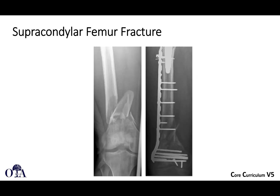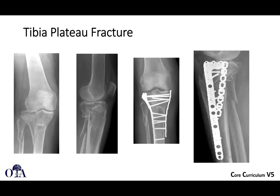Here's a supracondylar femur fracture, and you can see some kind of total hip arthroplasty stem in the femur above. There are some independent, possibly lag screws here, a plate and screws, maybe some locking screws down here, and it looks like there's a cable too. So a lot of different implants are being used to fix this fracture.